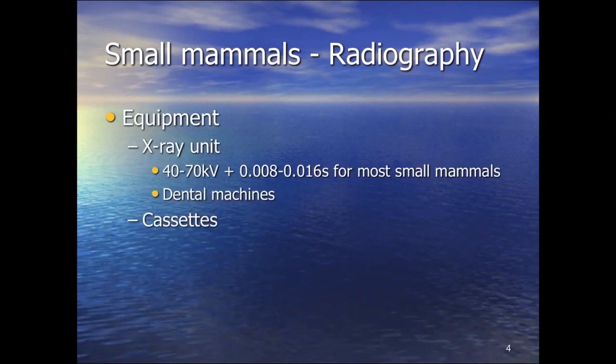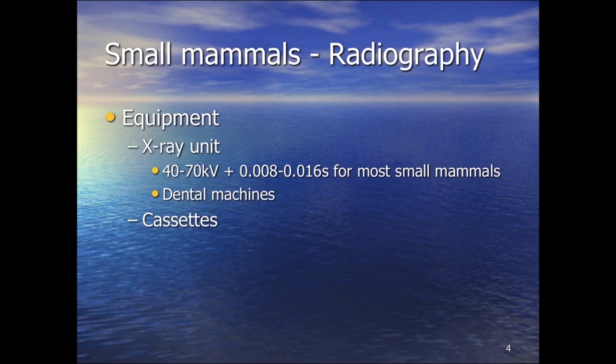Equipment-wise, for most small mammals: 40 to 70 kilovolts, 0.008 to 0.016 seconds. Most small head machines go up to 90 or 100 kilovolts. Dental machines are really useful for rodents and small birds because we can use non-screen film at a very short focal distance, giving magnification.